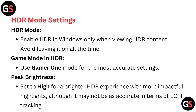HDR mode settings. Enable HDR in Windows only when viewing HDR content; avoid leaving it on all the time. Game mode in HDR: use Gamer 1 mode for the most accurate settings. Peak brightness: set to high for a brighter HDR experience with more impactful highlights, although it may not be as accurate in terms of EOTF tracking.